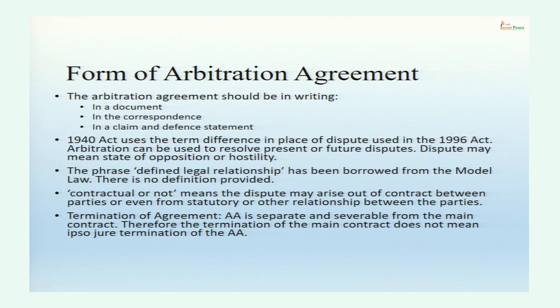The agreement may even emerge at the stage of trial — during the trial, one party may propose arbitration, the other party may accept, and the court may send them for arbitration. So an arbitration agreement can also arise out of claim and defence statements. To summarize: arbitration agreement must be in writing, and it is in writing if one of three conditions is fulfilled — a signed document, correspondence with a permanent record, or arising from claim and defence statements.